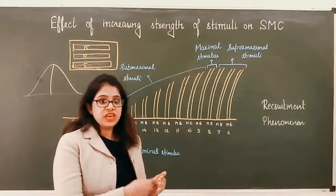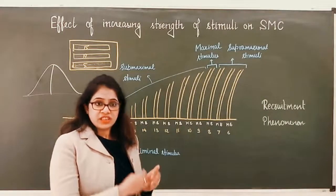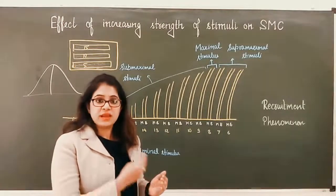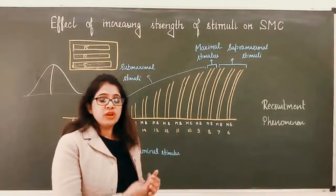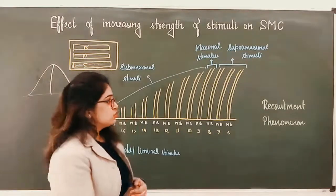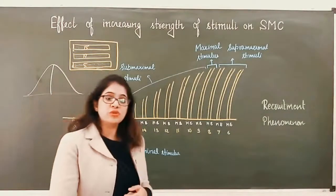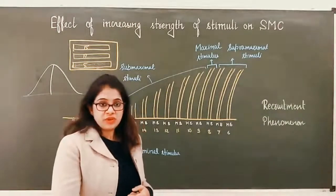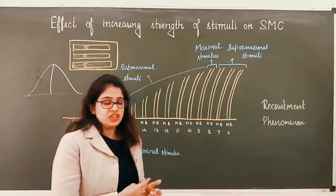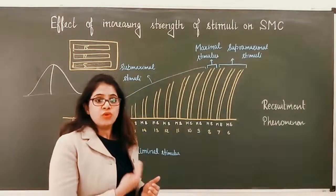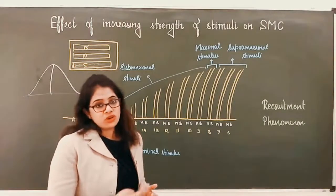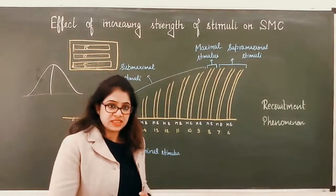So gradually as we increase the strength of the stimulus, more and more motor units keep on adding, and the force of contraction of the muscle becomes stronger and stronger. This phenomenon is called the recruitment phenomenon — as we keep on increasing the strength of stimuli, more and more motor units keep on adding and the force of contraction of the muscle increases.